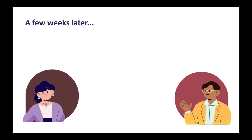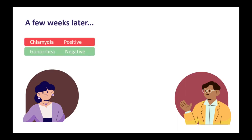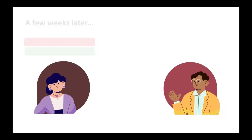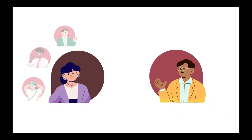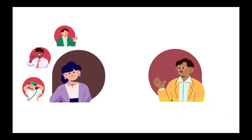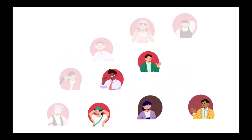Candice didn't know, and a few weeks later she noticed some abnormal discharge. She went to get tested, and as you probably could have guessed, she has chlamydia. In this time she's gone on a couple of other dates, and now there are a couple of other people who are at risk of being infected. And this is a knock-on effect.